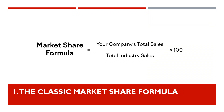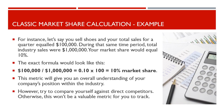In the classic market share formula, you need to first find your company's total sales for a preferred period, and then divide that number by the industry's total revenue during the same period, then multiply the number by 100 to get a percentage amount. For instance, let's say you sell shoes and your total sales for a quarter equaled $100,000. During that same time period, total industry sales were $1,000,000. Your market share would equal 10%. The exact formula would look like this: $100,000 divided by $1,000,000 equals 0.10, multiplied by 100, equals 10% market share. This metric will give you an overall understanding of your company's position within the industry.